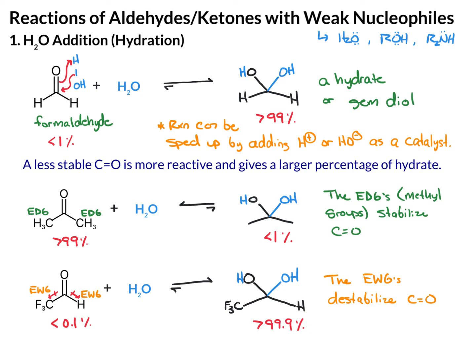For this reaction, sticking with aldehydes and ketones, the electron-withdrawing groups we'll generally see will be things like hydrogen or CX3. The reason I don't include things like chlorine or oxygen is because once you add a chlorine or oxygen here, this is no longer an aldehyde or a ketone — it becomes one of the carboxylic acid derivatives.